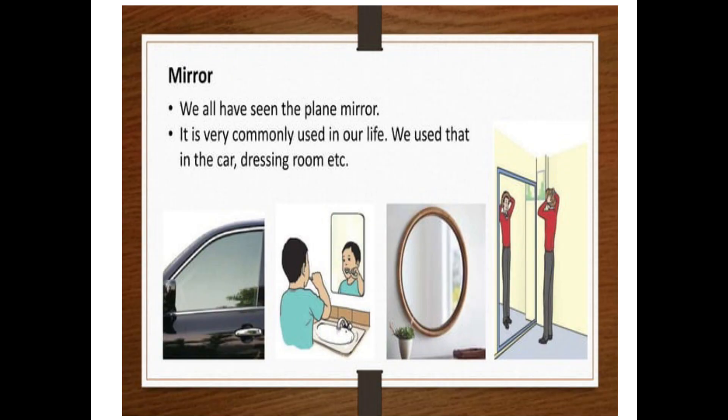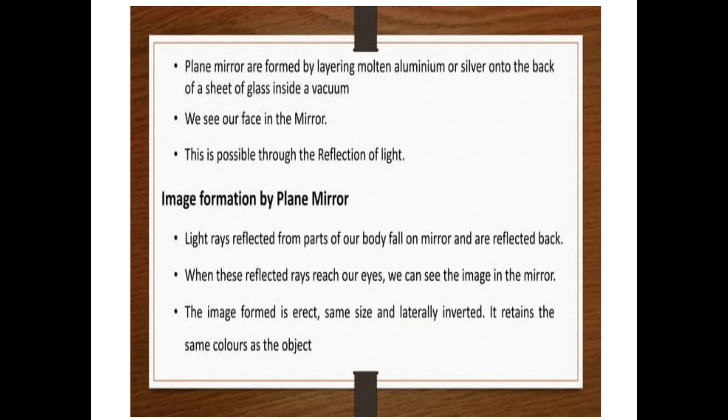A mirror. We all have seen the plain mirror which we regularly use in our house. It is very commonly used in our life. We use that in the car, dressing room, etc. Plain mirrors are formed by layering molten aluminum or silver onto the back of a sheet of glass inside a vacuum. We see our face in the mirror. This is possible through the reflection of light.